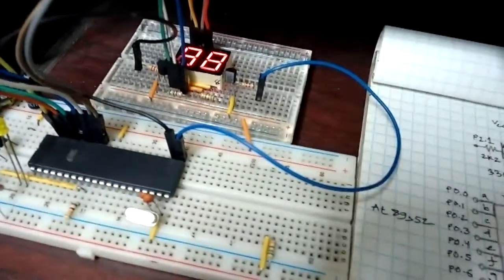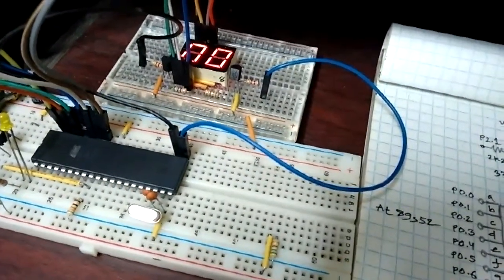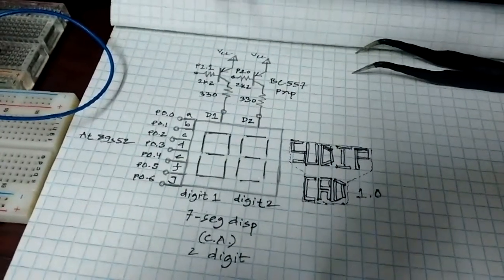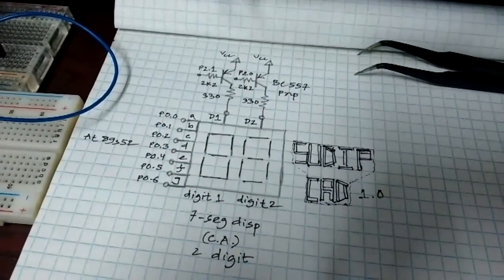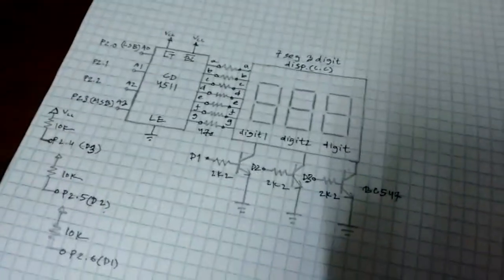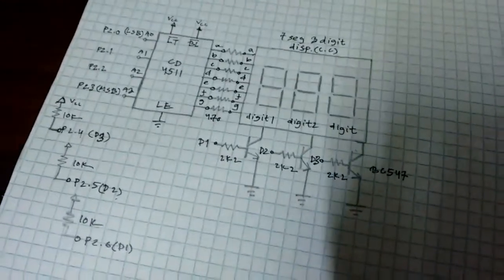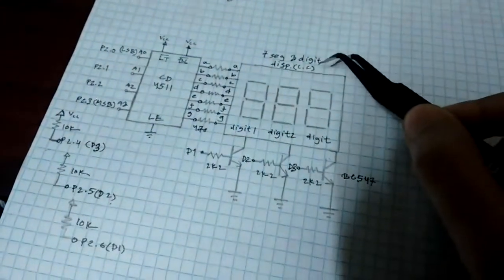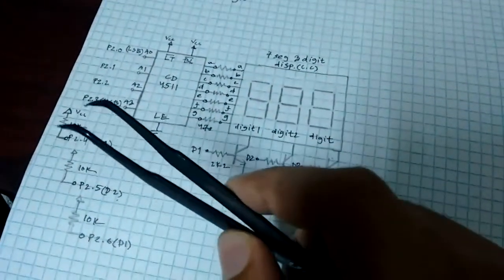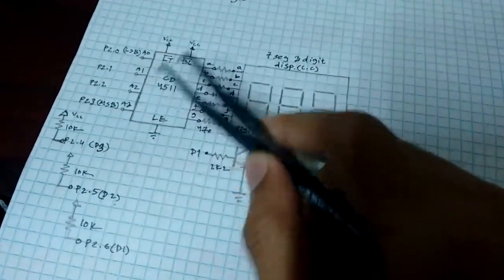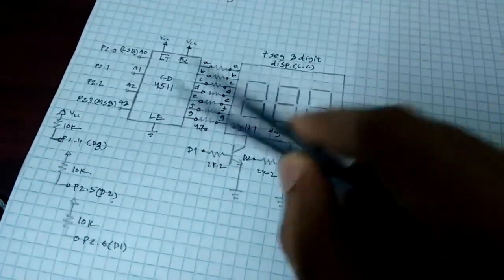In the last video I talked about interfacing a multi-digit common anode display with the AT89S52, and today in this video I will be talking about using a common cathode display with the AT89S52 through the CD4511 seven-segment driver.